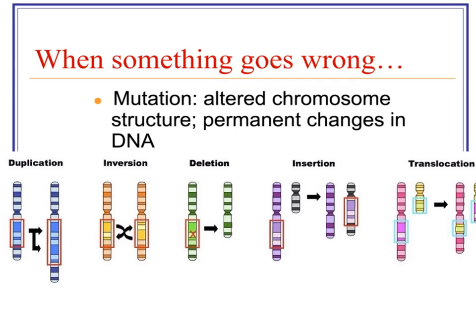Besides extra or missing chromosomes, we can also have mutations — an altered chromosome structure, a permanent change in the DNA. We focused mostly on point mutations earlier in the year, but we can also have duplications, inversions where part of it gets flip-flopped around, a deletion, an insertion where one part of a chromosome gets inserted onto another, or a translocation where two chromosome parts switch places.